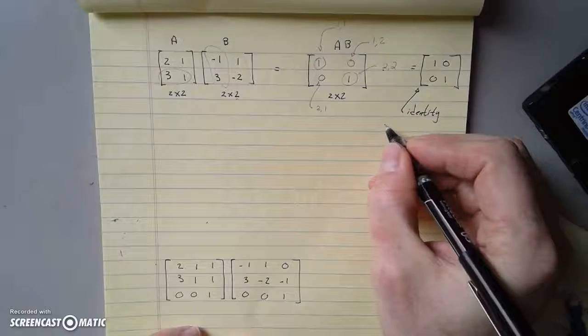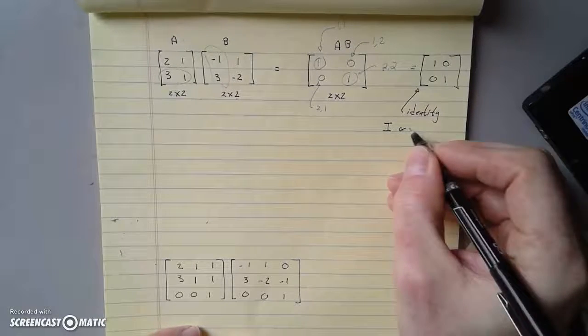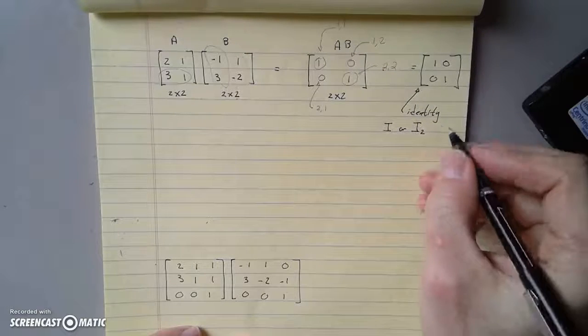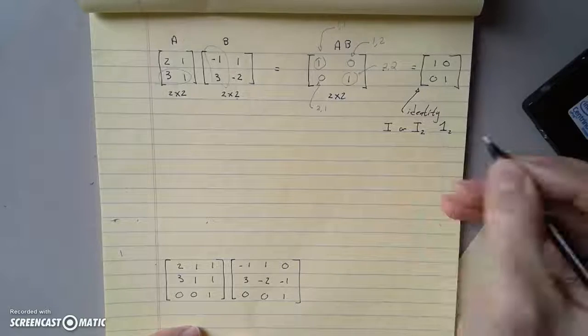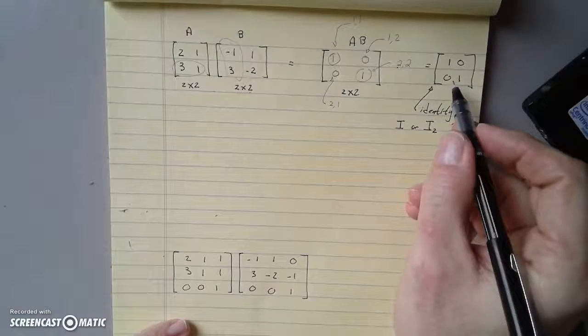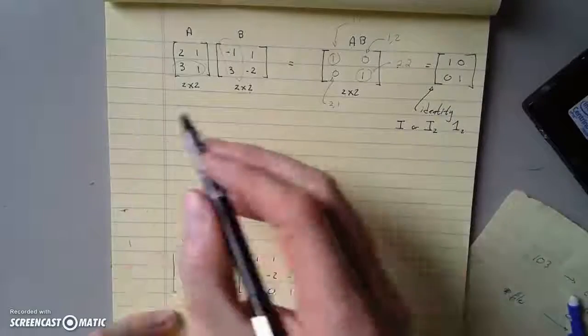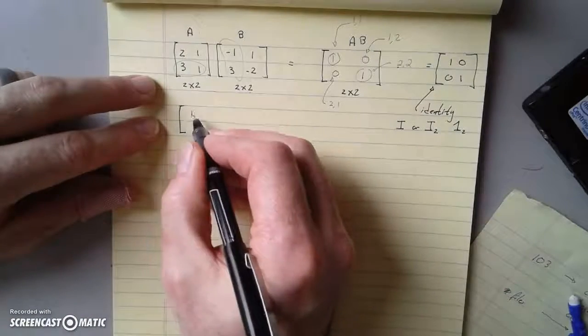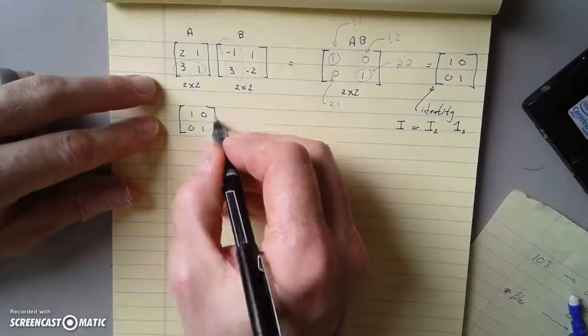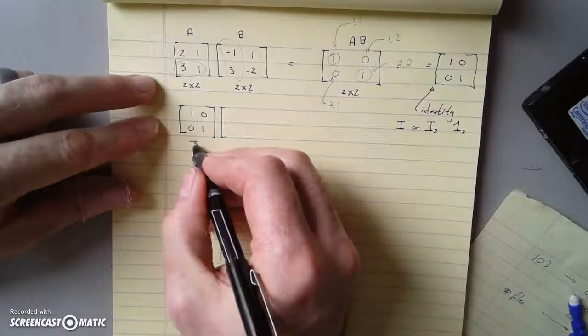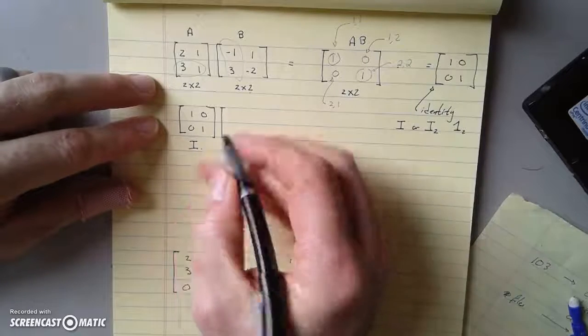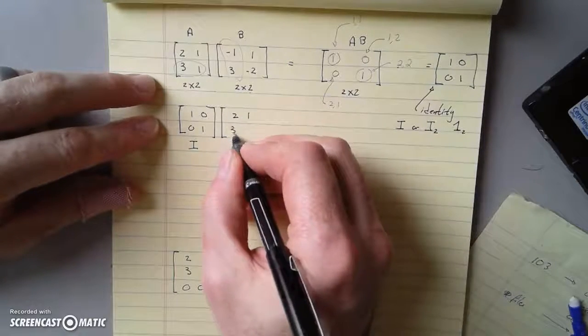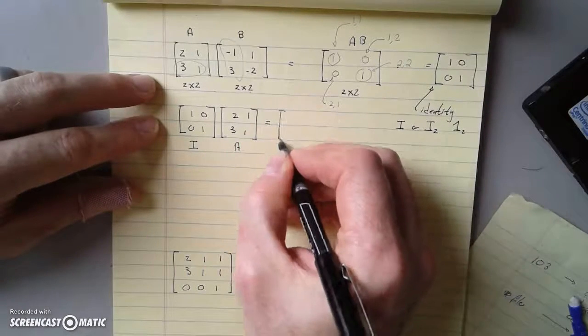We will frequently refer to it as I or might call it I₂ because it's a 2 by 2. We might call it I₂ or any number of notations. And here's the proper interesting property about this. Suppose I took this matrix 1, 0, 0, 1, and so this is I or I₂, times a 2, 1, 3, 1. What do I get from this?